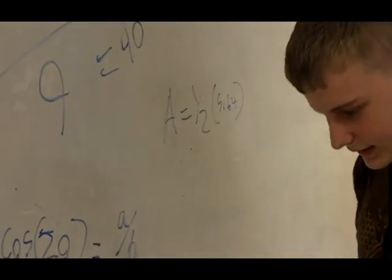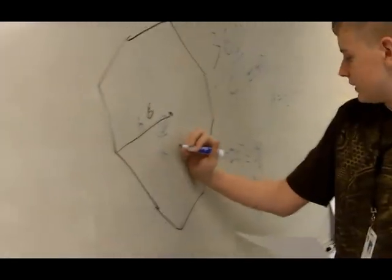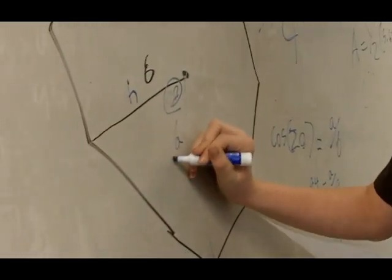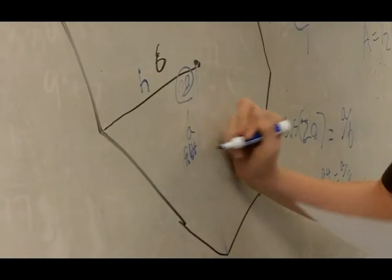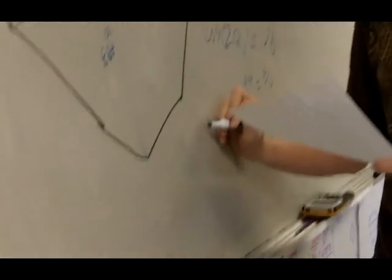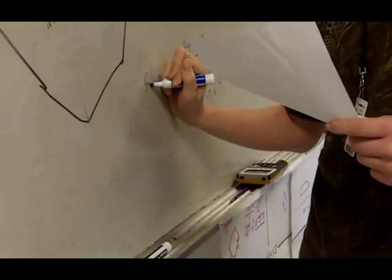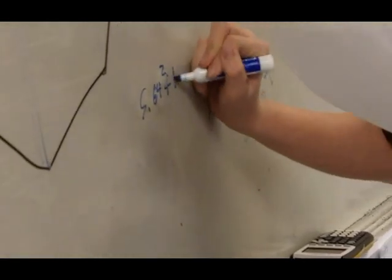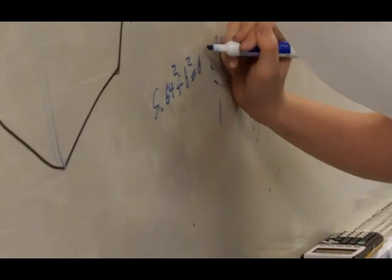Alright, and then next you're going to solve for perimeter. So you have 5.64. So you're going to do 5.64 squared plus B squared equals 6 squared.